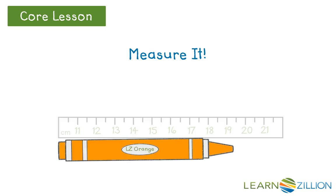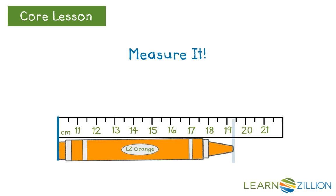Let's measure this crayon using centimeters. Our ruler does not begin with zero, but that's okay — we can still find its measurement. Let's first mark our ruler with the crayon's length using these blue lines. Next, we need to count the spaces on the ruler to find out the true measurement. We know the crayon is not really almost 19 centimeters long, since the ruler does not begin with zero.